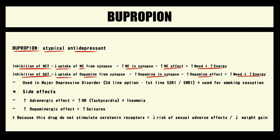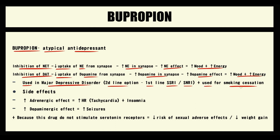Nowadays bupropion is used in the treatment of major depressive disorder, but only as a second-line option, because as first-line drugs we use selective serotonin reuptake inhibitors and selective norepinephrine reuptake inhibitors. In addition to this, bupropion can be used for smoking cessation, which is a unique feature.